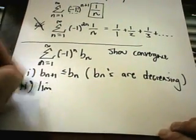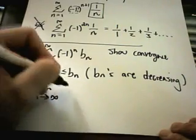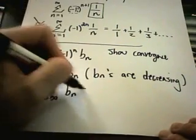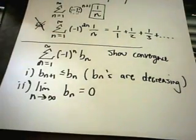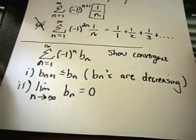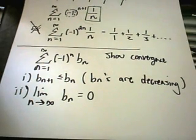The other thing you have to show is that the limit as n goes to infinity of the b sub n's equals 0. And if that happens, then you have an alternating series that's going to converge. If not, then it's going to diverge.